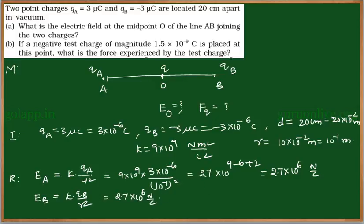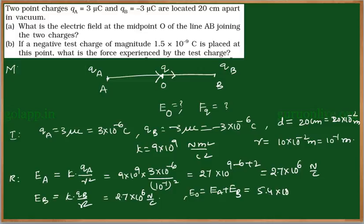The charge QA is positive, so the electric field at O is directed towards QB. QB is negative, so the electric field at O is also directed towards QB. The fields acting at O are in the same direction, so we can add them algebraically. Therefore E₀ equals EA plus EB, which equals 5.4 × 10⁶ Newton per coulomb — 2.7 plus 2.7 — giving the total field at the midpoint.